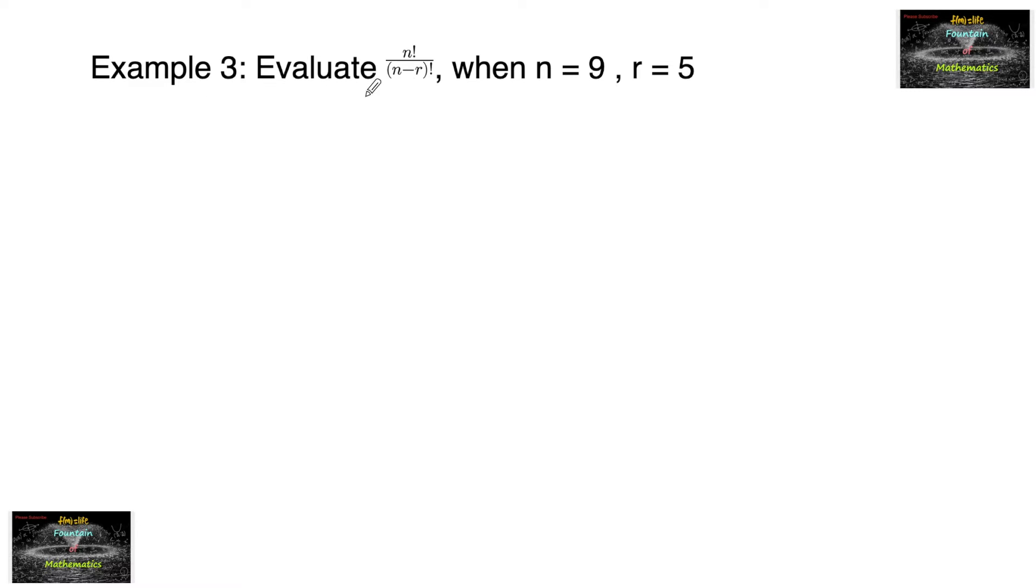Example 3, evaluate n factorial upon n minus r factorial when n is equal to 9 and r is equal to 5.